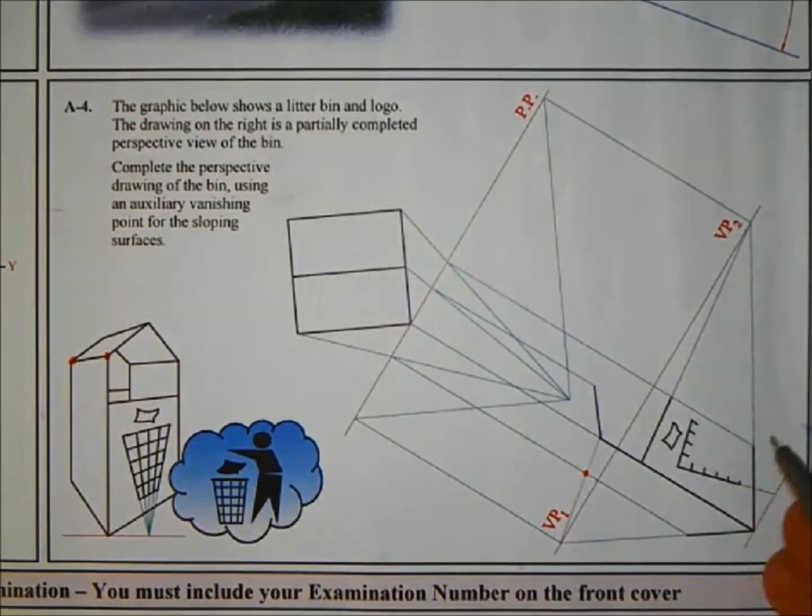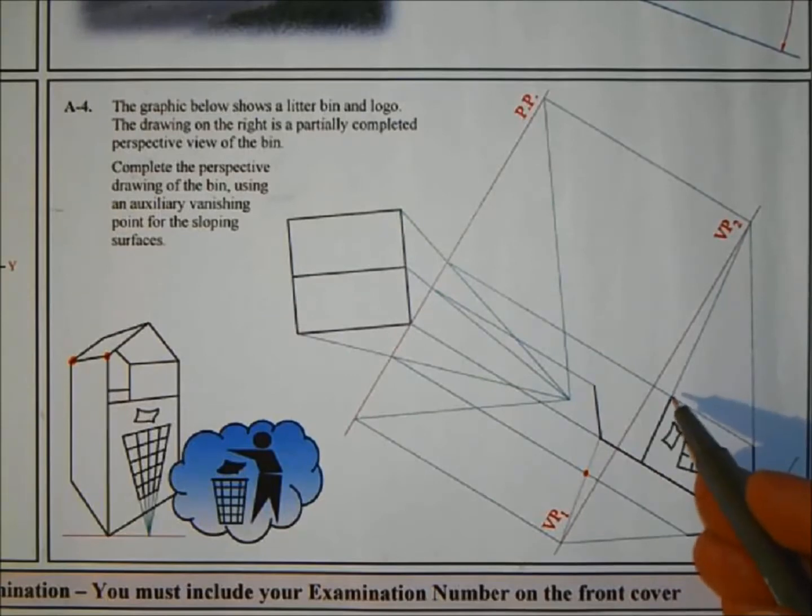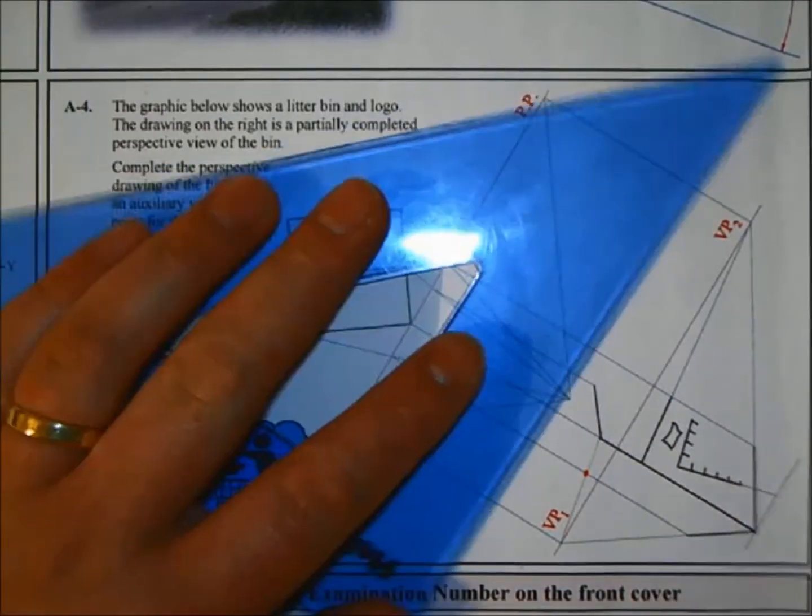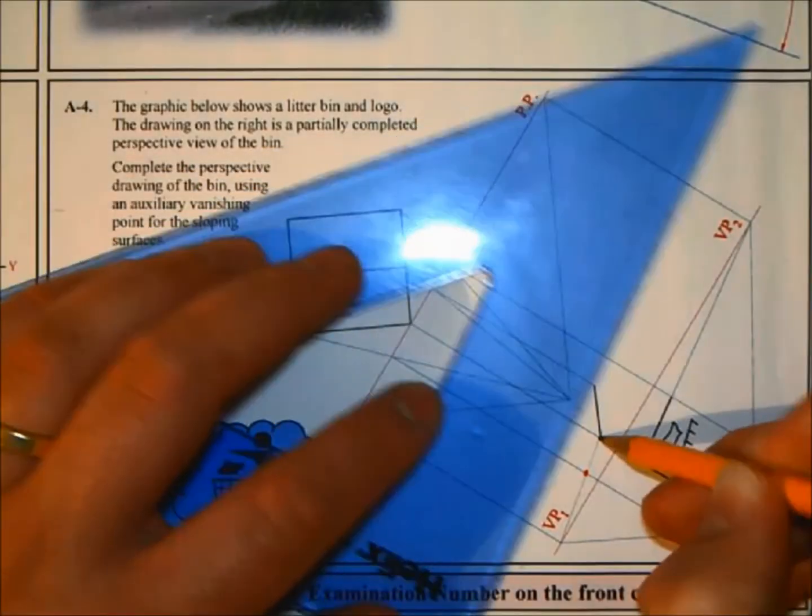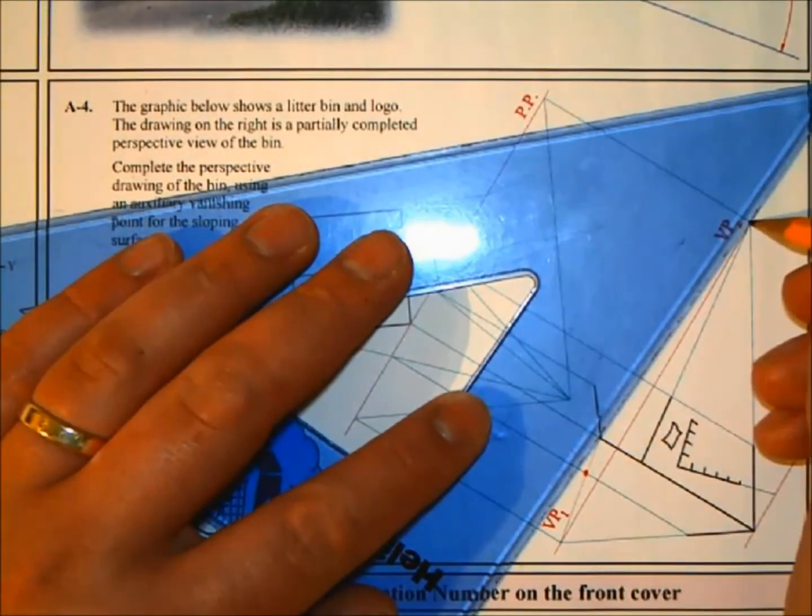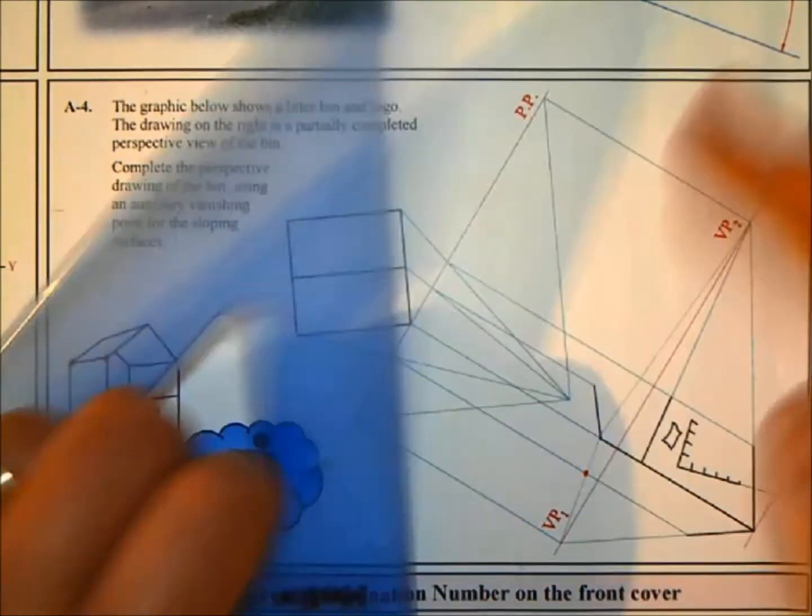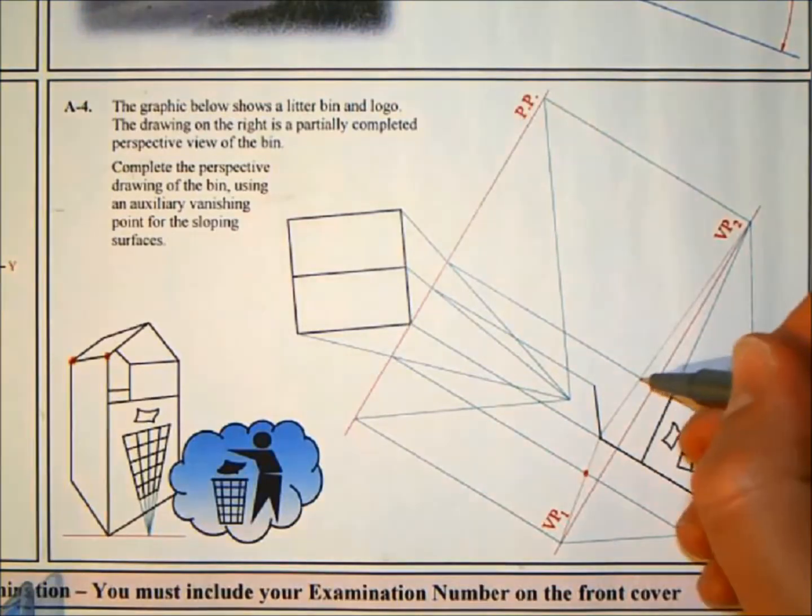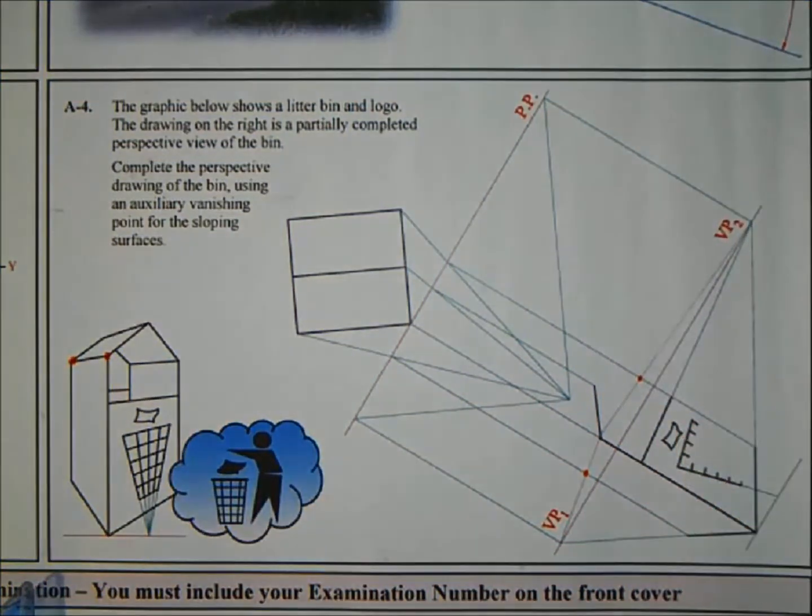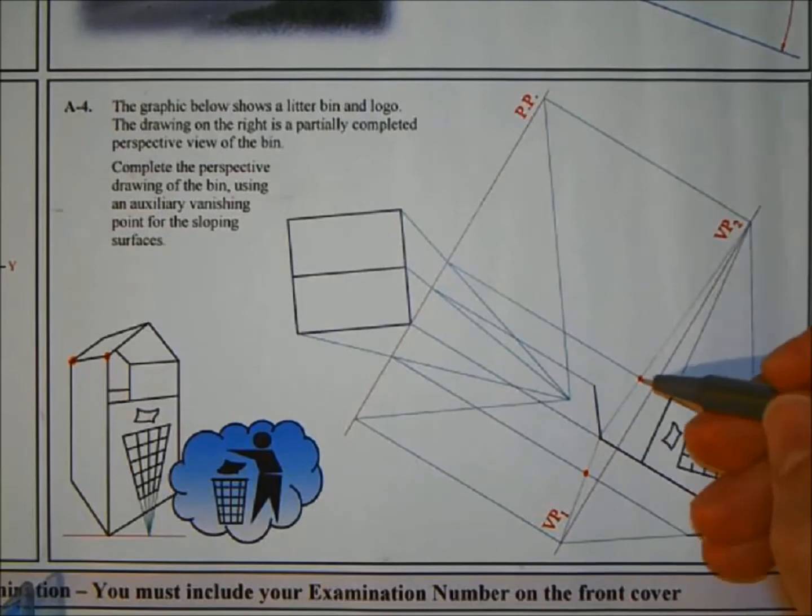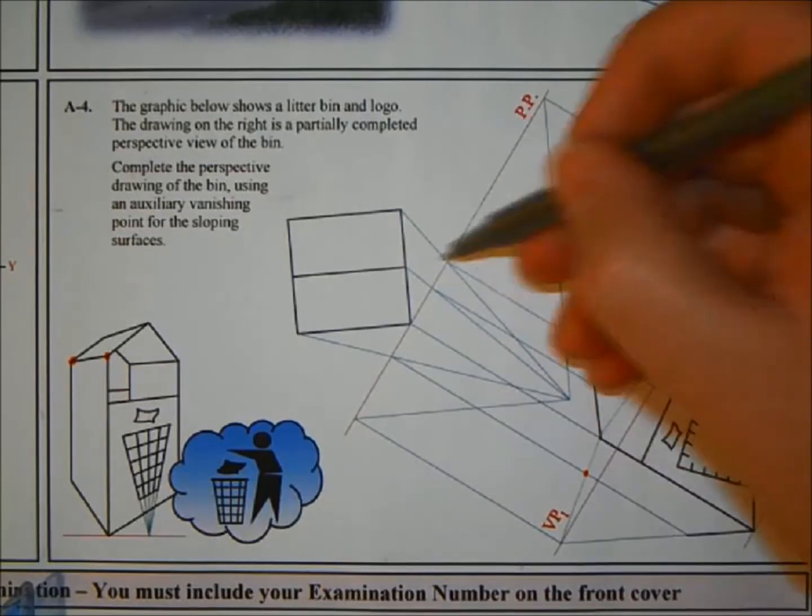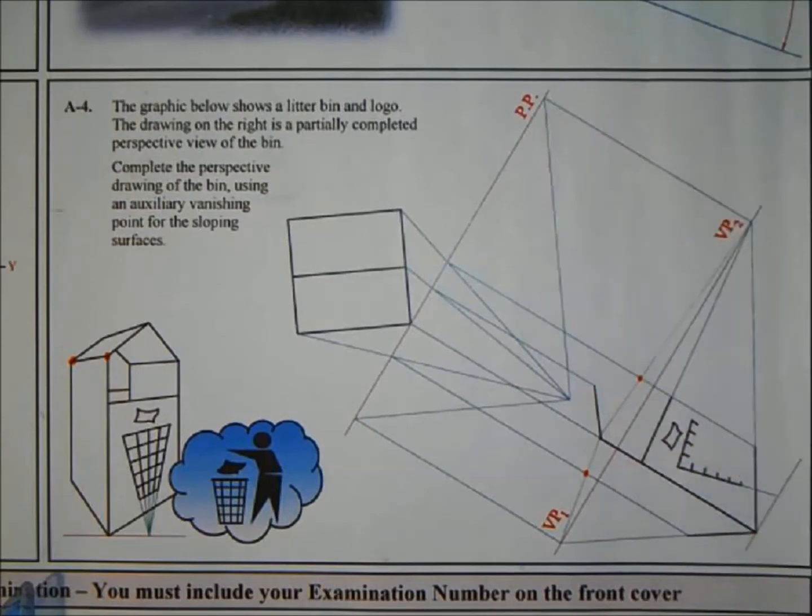Next we have the bottom of the bin here. This point, that's the height for that point there, it vanishes over to the right. So join this point over to VP2 and you will be given the height of the bin here up to this point. Next then is that's going to join up to our point here. We know that's stopping there because that's our point already, so that's our angle here.